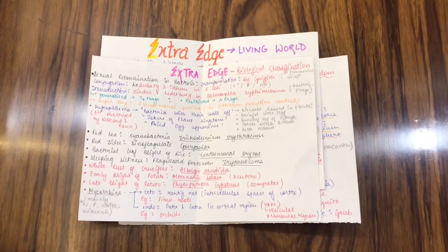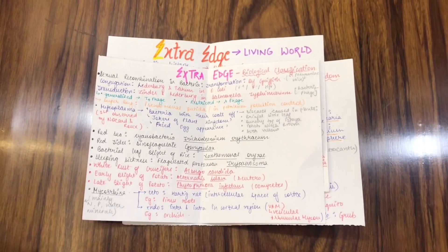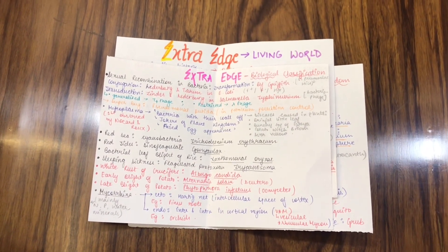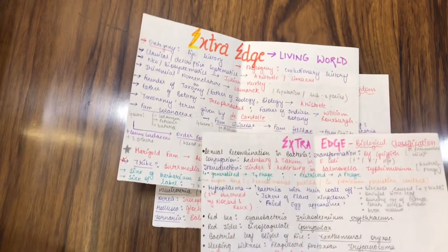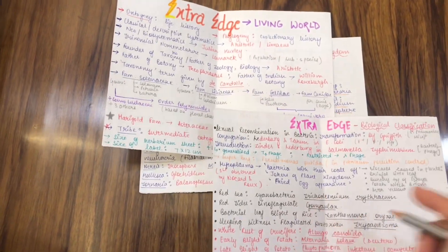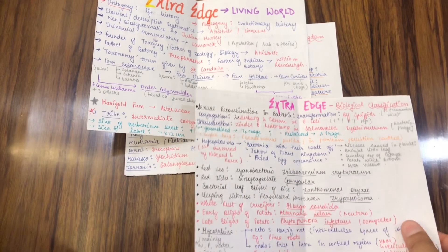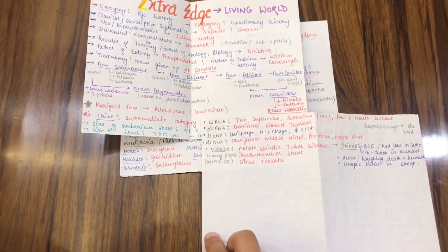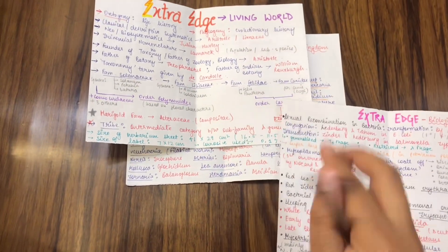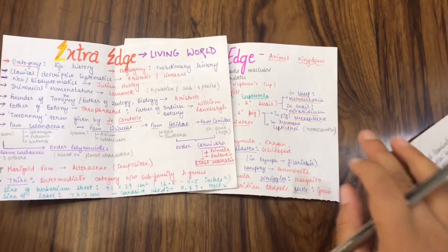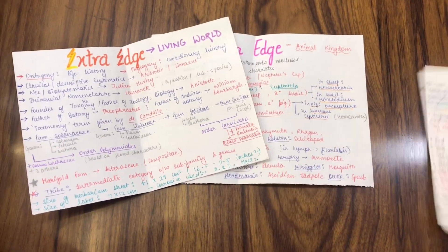This is one of the most important things that I did myself. Whenever I read any reference book or I give any practice tests and I find points that are not mentioned in NCERT, I write down those points in these flashcards that I made. These are some of the examples of living world, animal kingdom, biological classification.